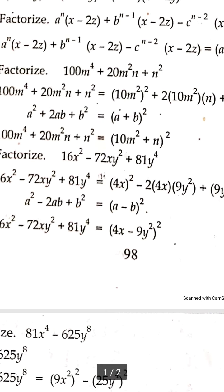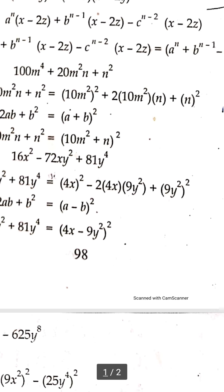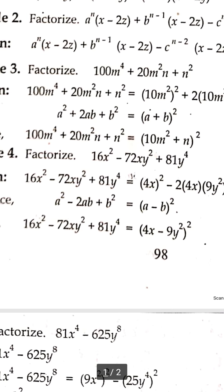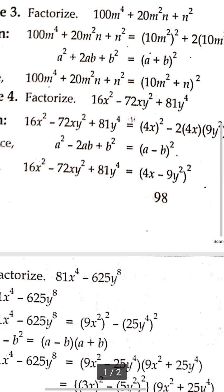Example 4: Factorize 16X² - 72XY² + 81Y⁴. We have (4X)² - 2(4X)(9Y²) + (9Y²)². By using A² - 2AB + B² formula, we can simplify this as (4X - 9Y²)².